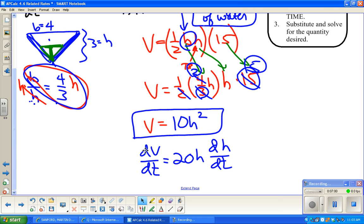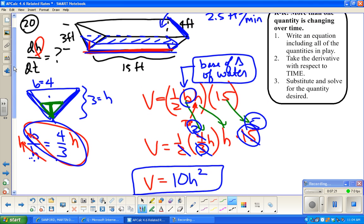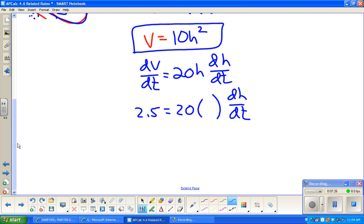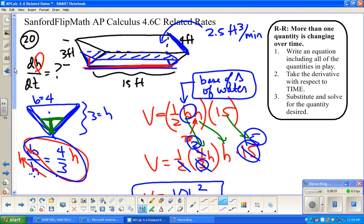They tell us dV/dt, it is a positive 2.5. We want to know dH/dt when the overall height of the water is two feet deep. So 2.5 equals 40 dH/dt divided by 40. So 2.5 divided by 40. 0.0625. And this is in feet per minute.